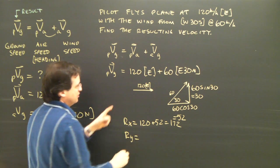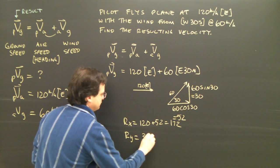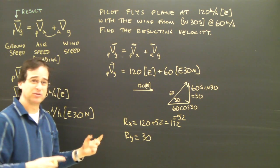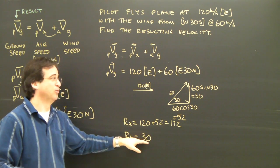In the y direction, there's no y component. I have 30. So my resultant velocity has an x component of 172 and a y component of 30.